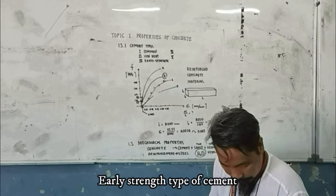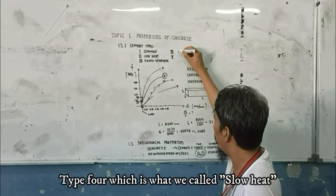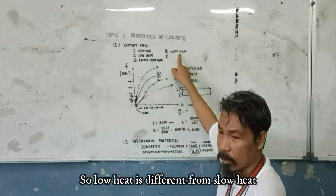Then we use type 4, which is what we call low heat. Okay. So low heat. So low heat is different from slow heat. So, type 5.